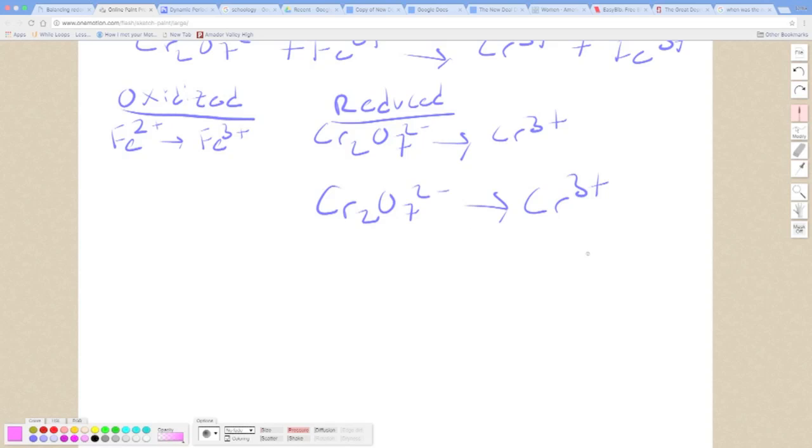And our next step is to balance the half reactions. So for the oxidized one, we see one Fe and one Fe, so that looks good over there. On this side, we're supposed to balance everything besides the oxygen and the hydrogen. So if we look at this, we have a Cr2 and a Cr. Need an extra chromium.